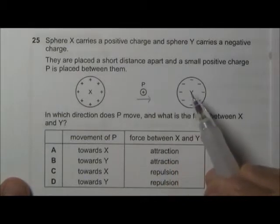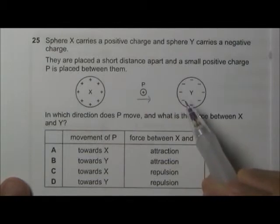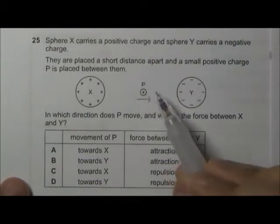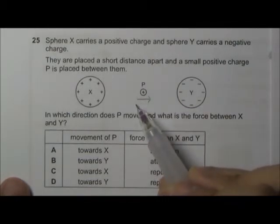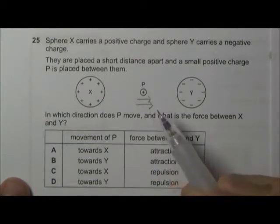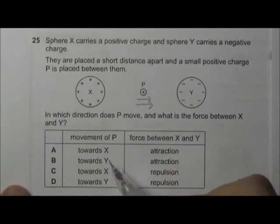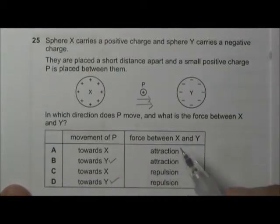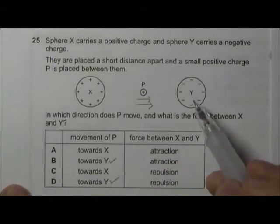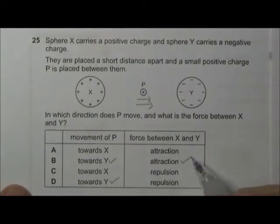Now let's look at the interaction between P and Y. P is positively charged, Y is negatively charged. Since they are unlike charges, they will attract each other. So it will also cause P to move in this direction. So movement of P, it will be towards Y. And the force between X and Y because they are unlike charges, they attract. So it should be attraction. So the answer should be B.